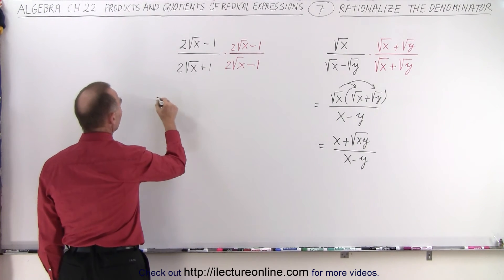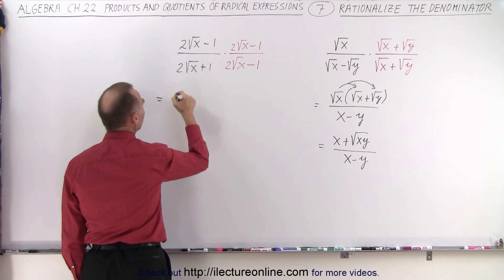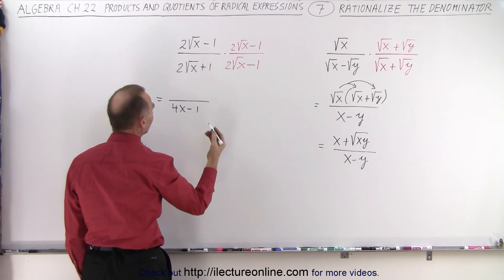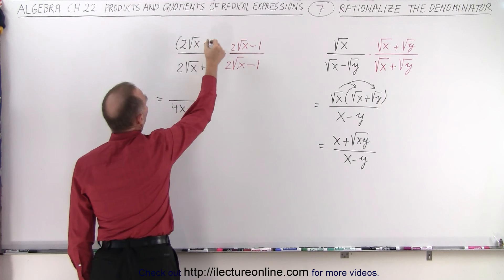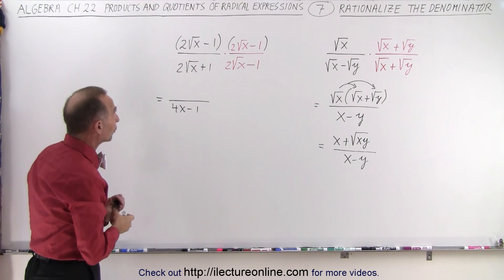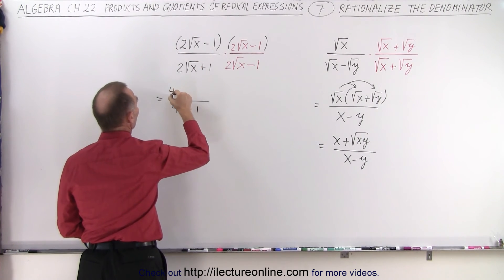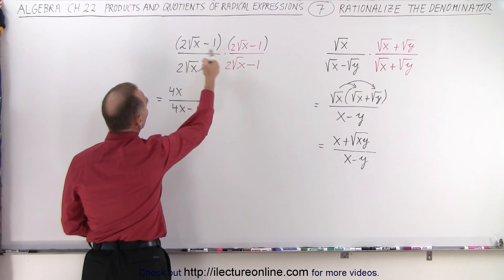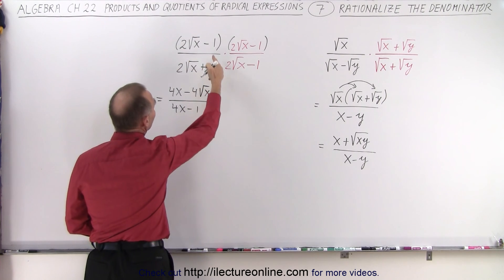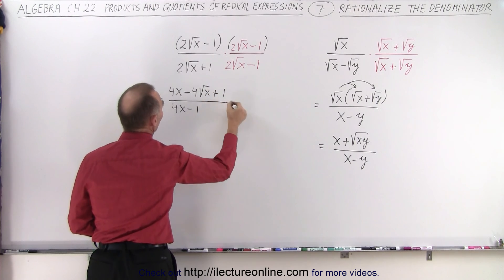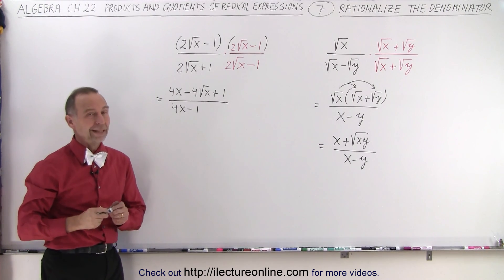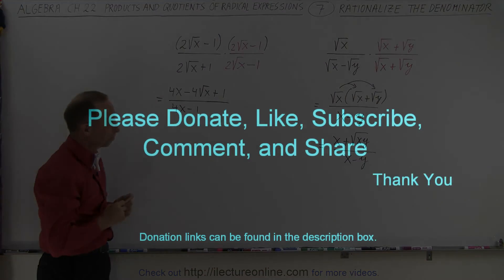Here, the same thing will happen. When we multiply the denominators, we take the first term squared, which is 4 times x, minus the last term squared, which is minus 1. In the numerator, we multiply 2 times the square root of x minus 1 by 2 times the square root of x minus 1, giving us the first term squared, which is 4 times x, minus twice the product of the two, which is minus 4 times the square root of x, plus the last term squared, which is plus 1. That gives us the numerator over the denominator, and that's as simple as we can write it. And that is how it's done.